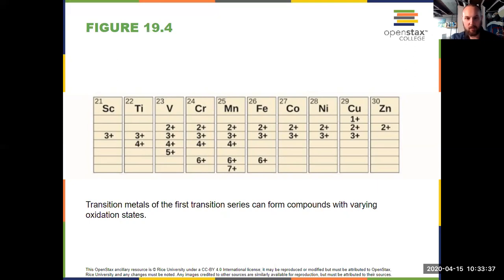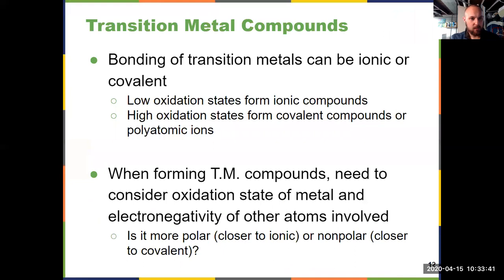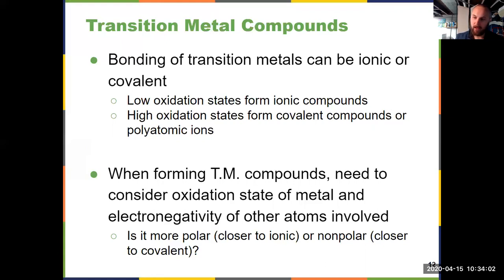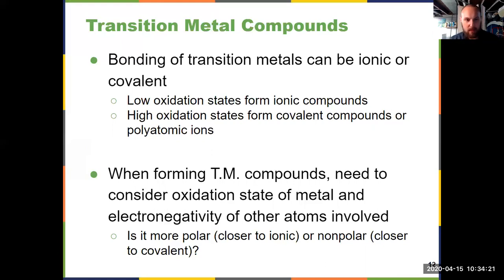We're going to skip the textbook section about iron, silver, and copper and how they're isolated, and go right to transition metal compounds. When looking at a compound involving a transition metal, the bonding can be ionic or covalent. The oxidation state is critical here: transition metals with low oxidation numbers tend to form ionic compounds, while higher oxidation numbers increase the likelihood of forming covalent compounds or polyatomic ions involving coordinate covalent bonds. In this chapter, we need to first consider whether the oxidation state is low, favoring ionic, or high, favoring covalent.